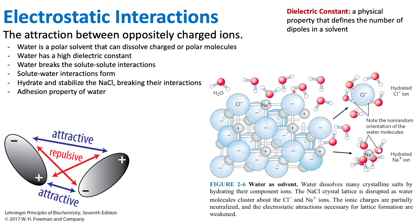We know that water has many dipoles because every single water molecule is polar. The oxygen has a very high electronegativity, pulling the electrons towards its nucleus, giving oxygen a partial negative charge and hydrogen a partial positive charge. That is why water has a very high dielectric constant — it has a lot of dipoles, and since it has a lot of dipoles, it is able to interact with a lot of ions.